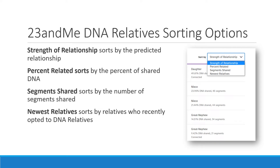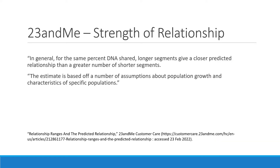To understand which sorting option to use, we first need to understand how strength of relationship is determined. In the customer care article at 23andMe called 'Relationship Ranges and the Predicted Relationship,' it says: in general, for the same percent DNA shared, longer segments give a closer predicted relationship than a greater number of shorter segments.